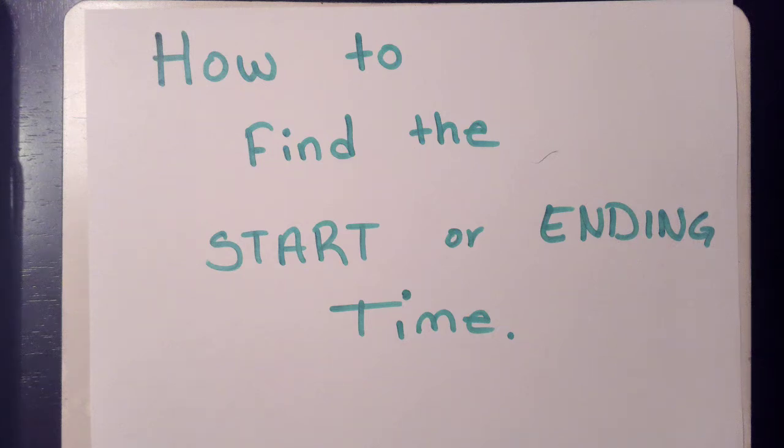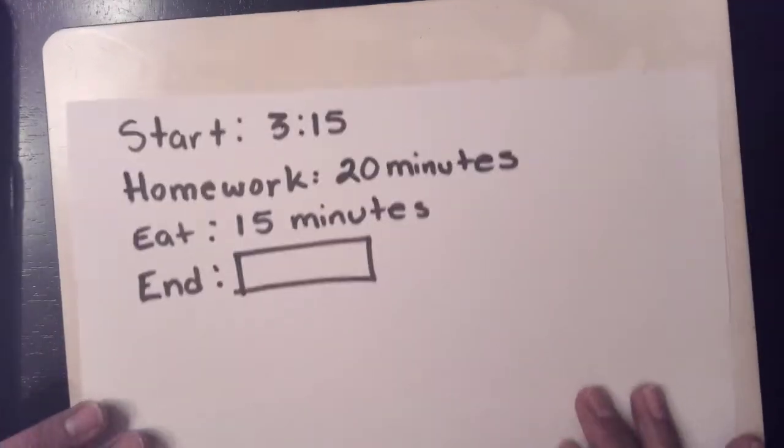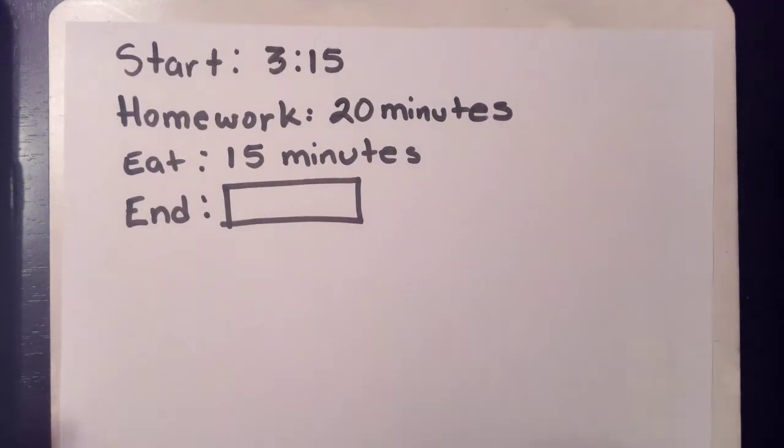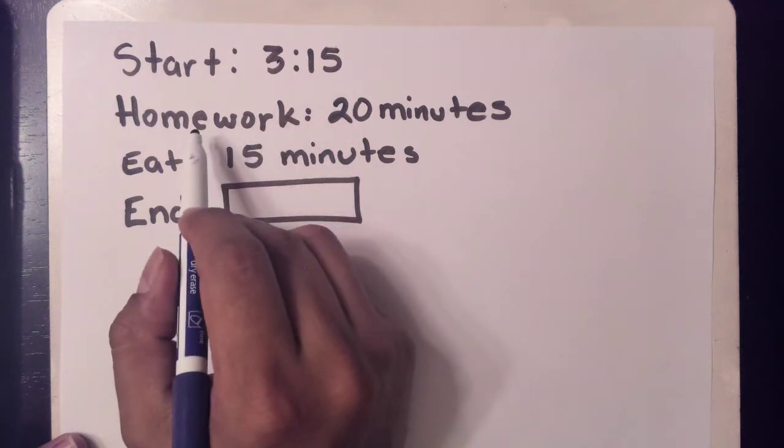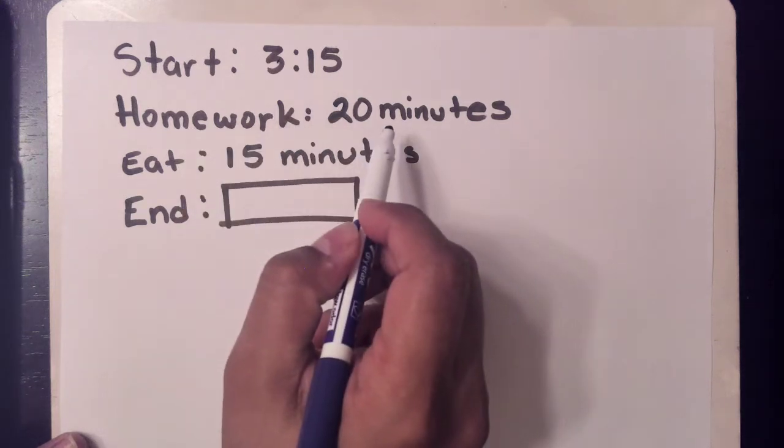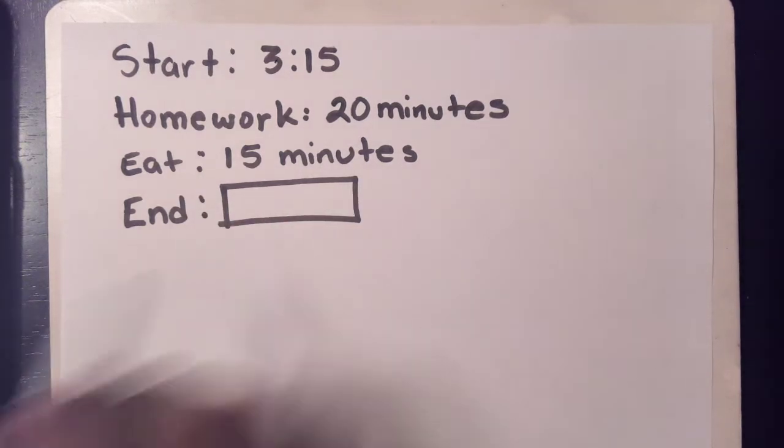Okay, so today we're going to figure out how to find the start time or the ending time depending on the situation. Let's start by trying to find the ending time. So let's say we start at 3:15 and it takes you 20 minutes to do your homework, 15 minutes to eat. What time are you going to end?